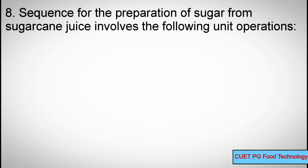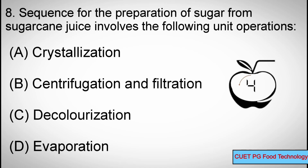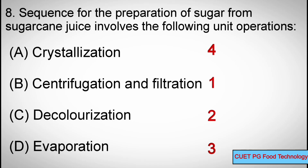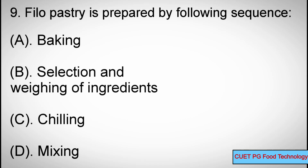Question number eight: The sequence for the preparation of sugar from sugarcane juice involves the following unit operations — options: A) Crystallization, B) Centrifugation and filtration, C) Decolorization, D) Evaporation. The correct sequence is: Centrifugation and filtration, then Decolorization, then Evaporation, and finally Crystallization.